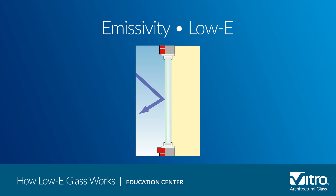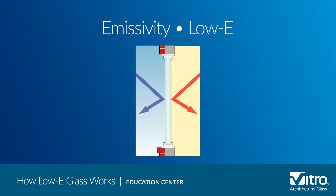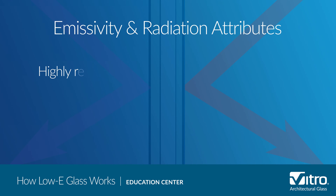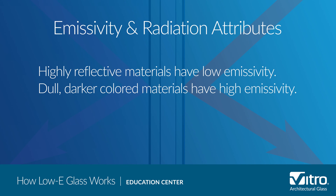When heat or light energy is absorbed by glass, it is cooled by moving air or re-radiated by the glass surface. The relative ability of a material's surface to radiate energy is known as emissivity. In general, highly reflective materials have a low emissivity, and dull, darker colored materials have a high emissivity.